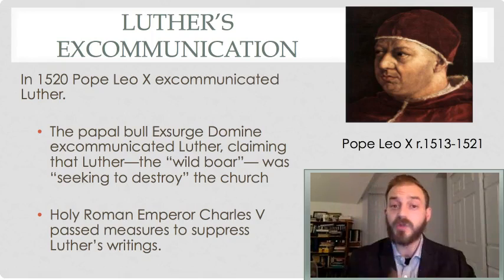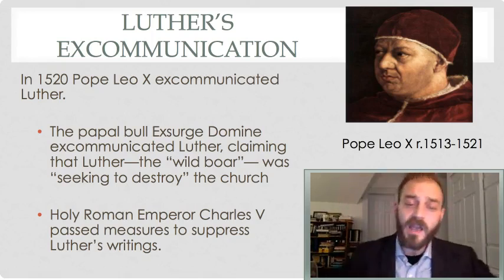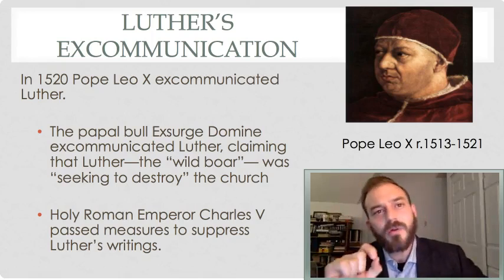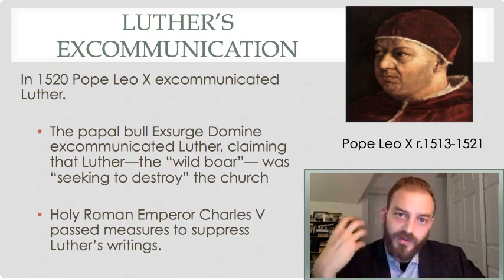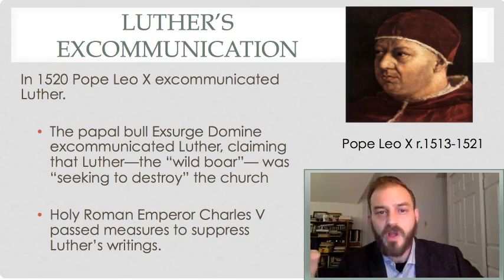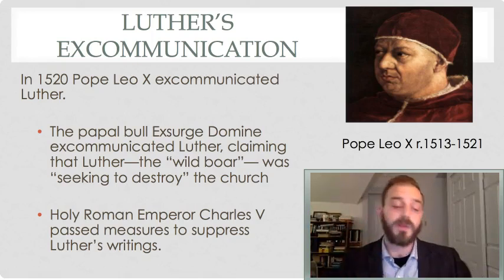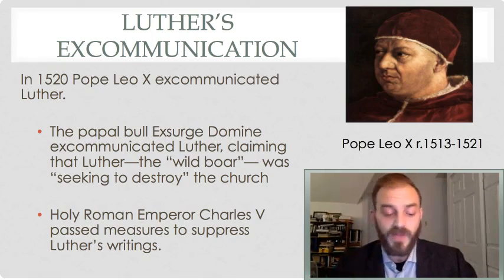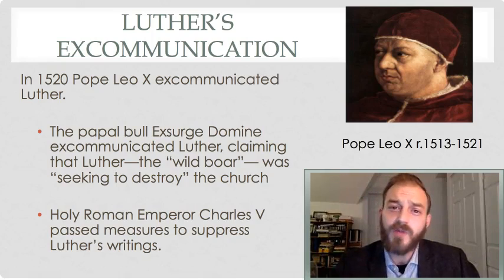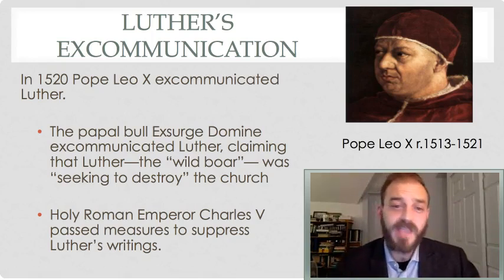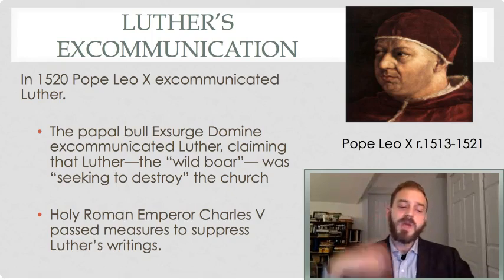For these ideas, Luther is excommunicated by Pope Leo X in 1520. Leo issues a bull, Exsurge Domine, meaning 'arise, O Lord,' claiming that Luther, 'the wild boar,' was destroying the church. Luther was rejecting the authority of the Pope, the entire system of sacramentology, purgatory, and the need of merit and works. The Pope saw in this a radical who would destabilize society — if we are made righteous not by works but purely by the grace of Christ, would this not lead to anarchy? Would this not lead people to do whatever is right in their own eyes? Would it not leave the church open to the power of secular rulers?